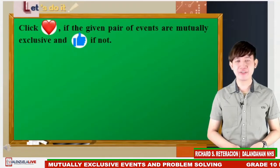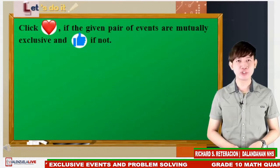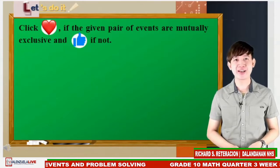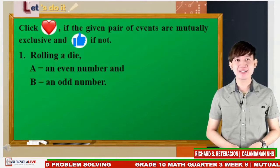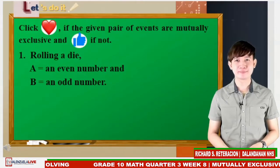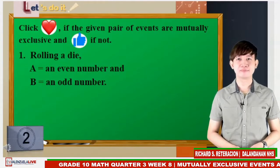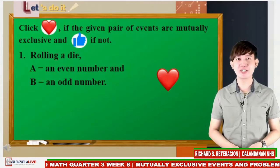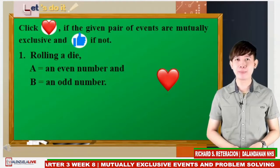Now, let us have an activity. Click heart emoji if the given pair of events are mutually exclusive, and like emoji if not. You'll have 5 seconds to give your answer. Number 1: Rolling a die. A is a set that contains an even number and B is a set that contains an odd number. That's right — heart emoji. It is not possible to have a common element between an even number and an odd number.